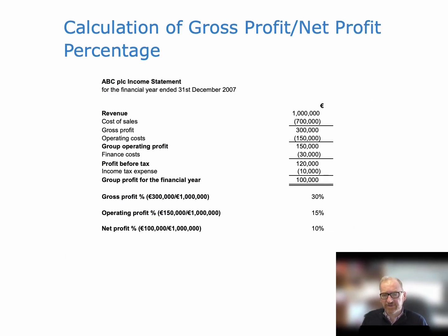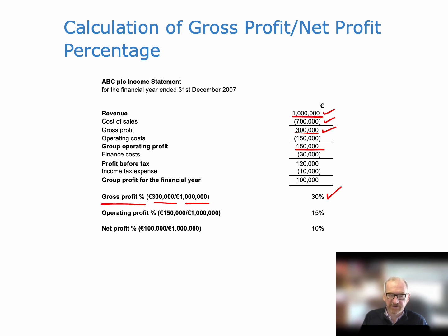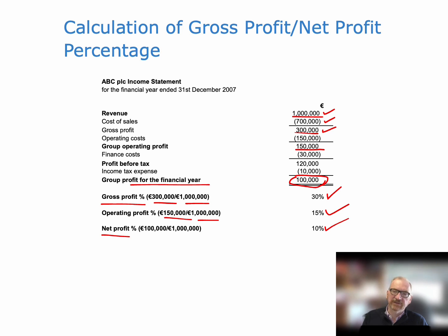Here's an example of how this works. We've got revenue, cost of sales of 700, and a gross profit of 300,000. So our gross profit percentage is going to be 300,000 divided by 1,000,000 — gross profit divided by revenue — which is 30%. Our operating profit is 150,000, and operating costs have been subtracted, so operating profit percentage is 150,000 divided by revenue of 1,000,000, which is 15%. And net profit at the bottom — the profit for the financial year — is 100,000, so it's 100,000 divided by 1,000,000, which is 10%.